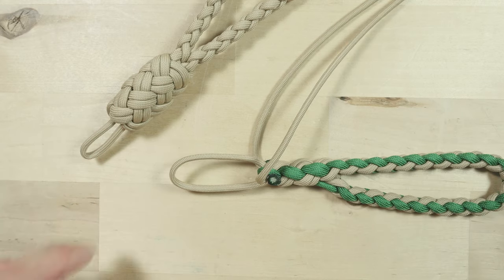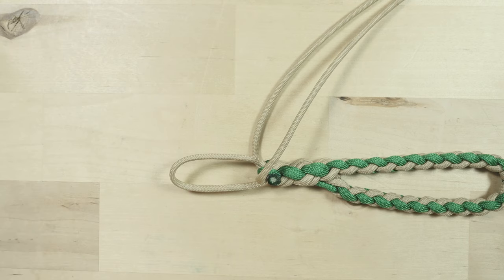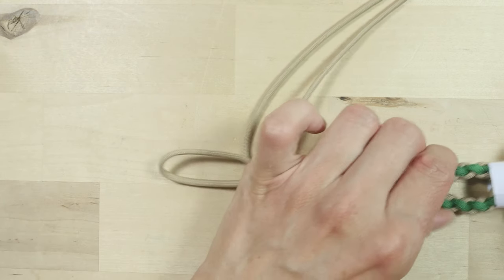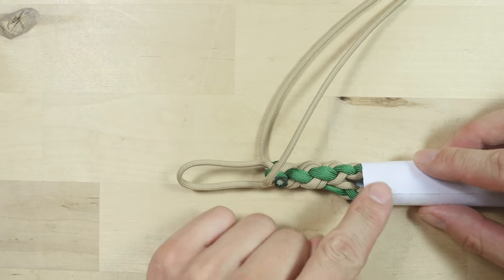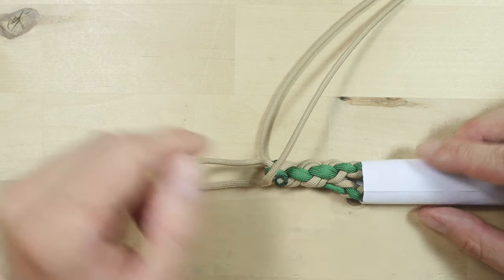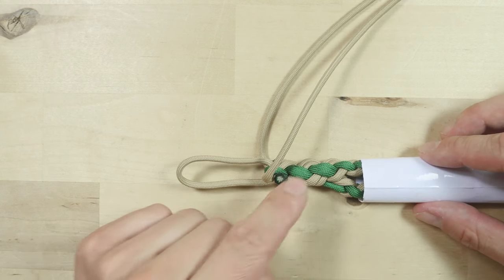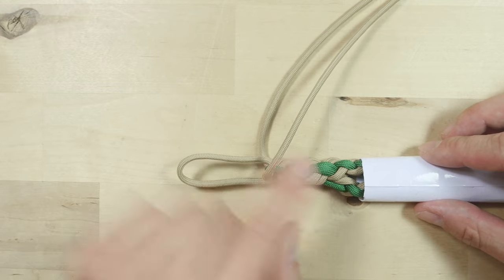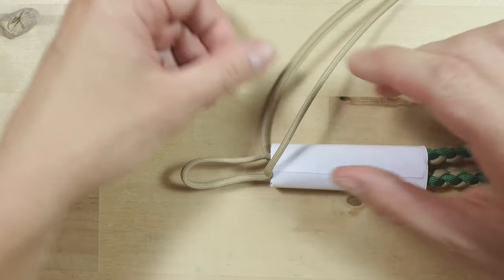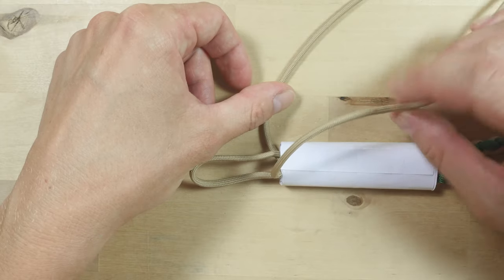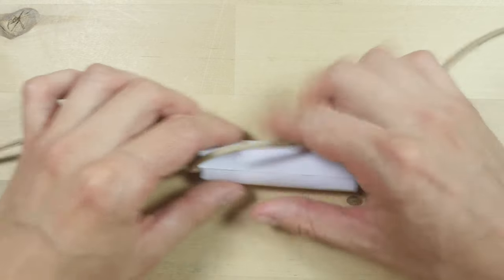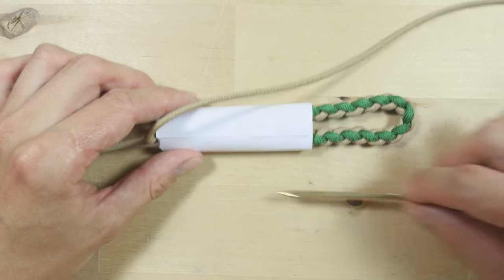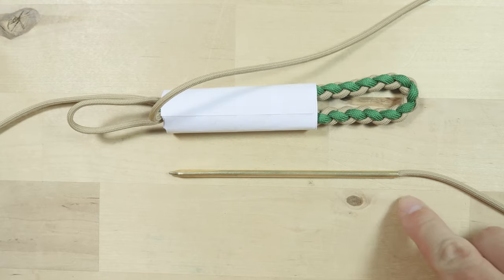This is a doubled up 7 part 4-bight turk's head. To make things easier to see, I'm going to cover the joint section using a paper tube. You don't have to do this, you can tie your knot directly over the joint section. We are going to use one of our ends for now, leave the other one to the side. If you have one, attach a lacing needle onto your end.